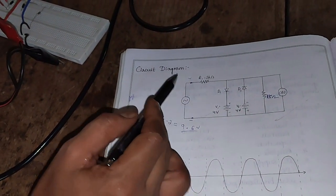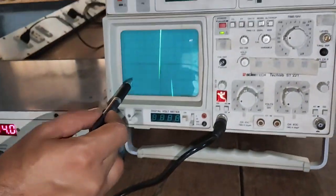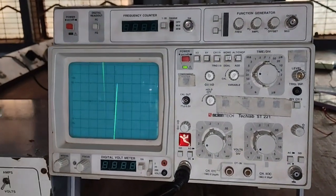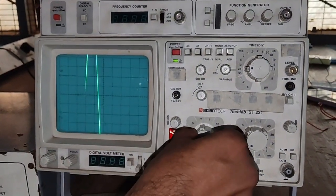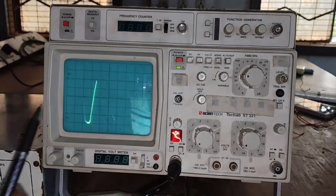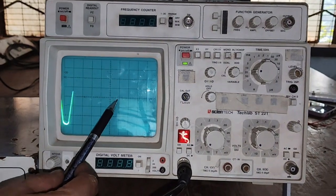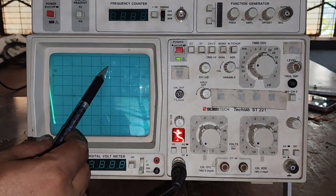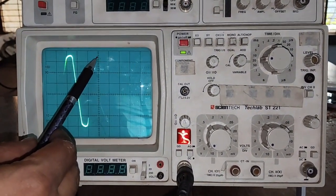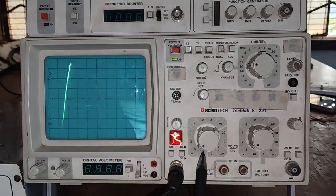AC source. On the CRO, we can see that we are obtaining the input voltage. Change the volts per division and measure its value. Its height is 6.4 divisions times 5.